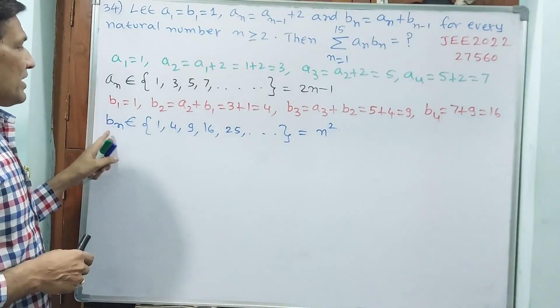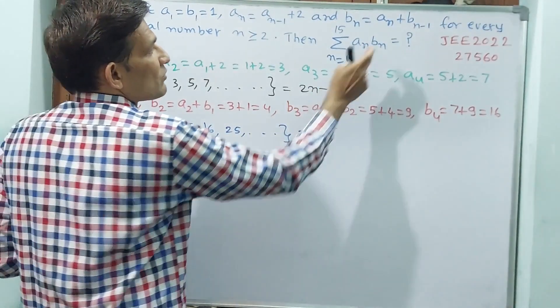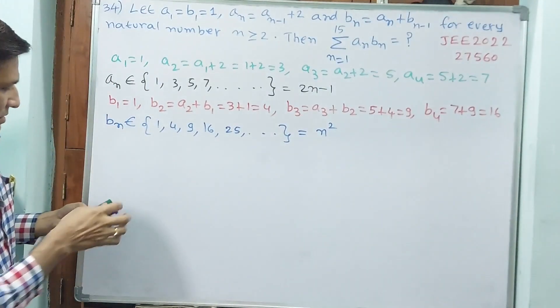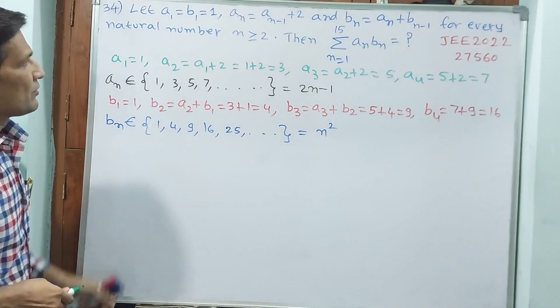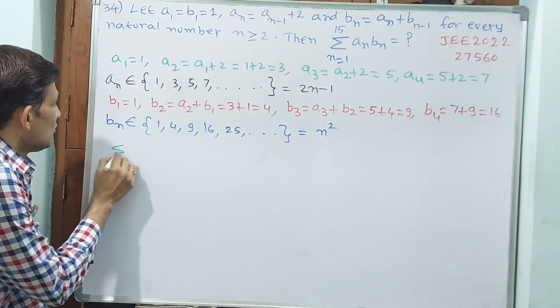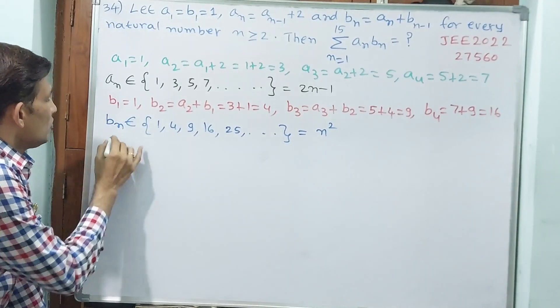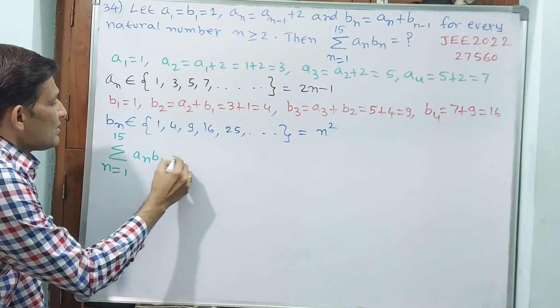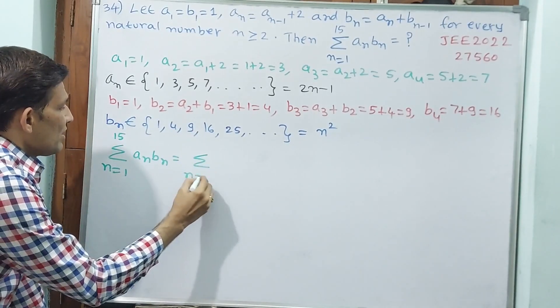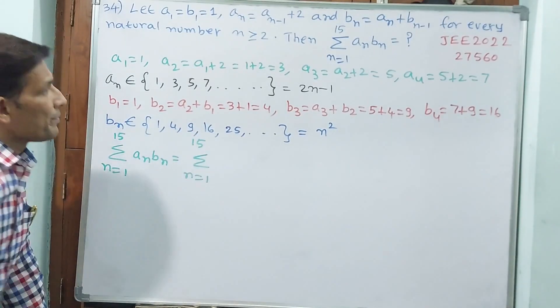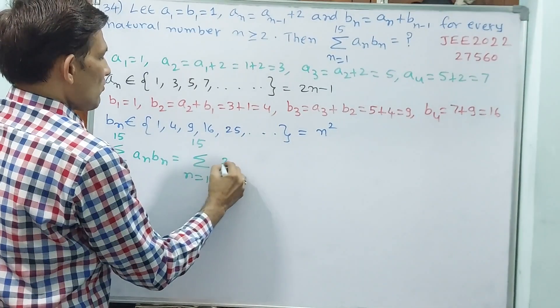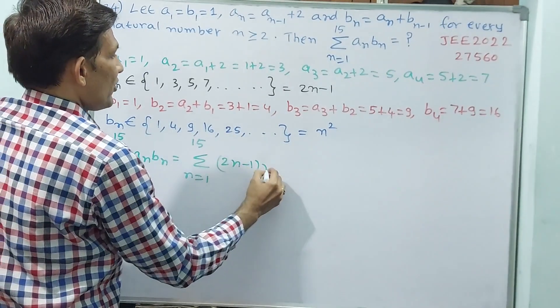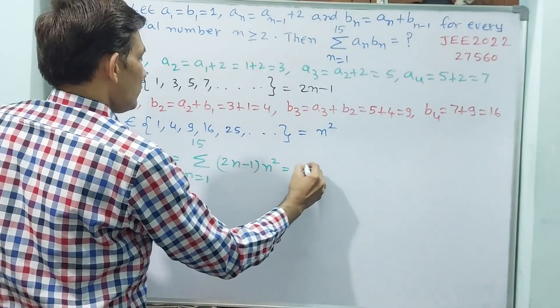Now, a_n, b_n you know these two, then you substitute here. Okay, now you see. Sigma, n is equal to 1 to 15, a_n b_n is equal to sigma n is equal to 1 to 15, 2n minus 1 into n square.